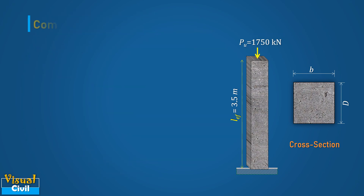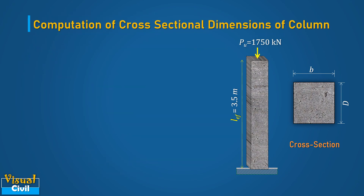To compute the cross-sectional dimension of the column, the following assumptions are made. First, the column is an axially loaded short column.